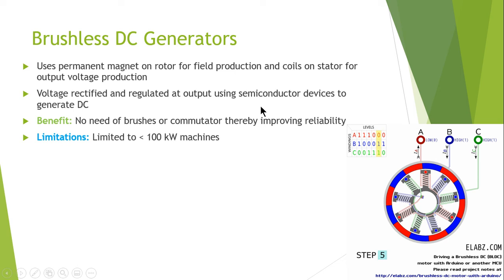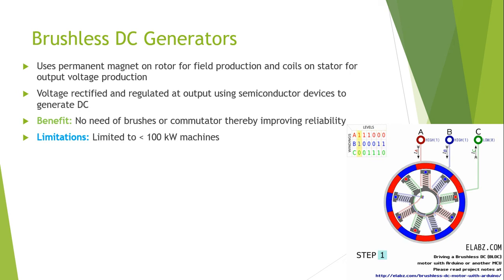Brushless motors offer other advantages over brushed DC motors, including a high torque-to-weight ratio, meaning they are more efficient. Their efficiency is relatively improved compared to the conventional brushed DC motor. Also, ionized sparks from the commutator are completely eliminated.